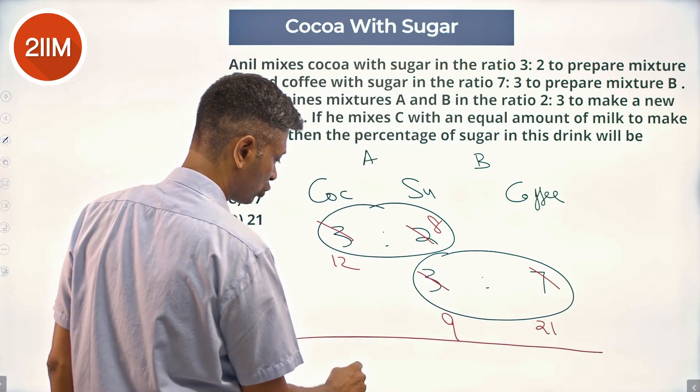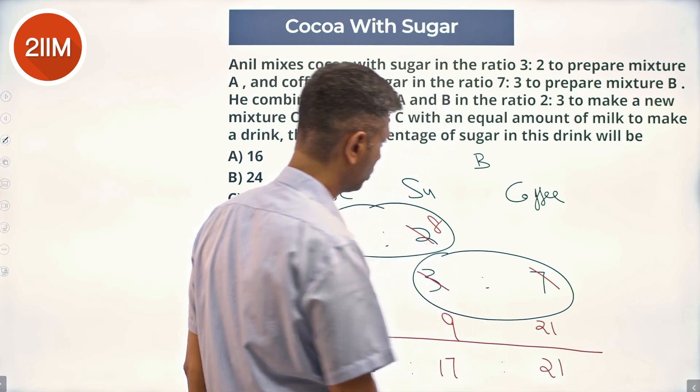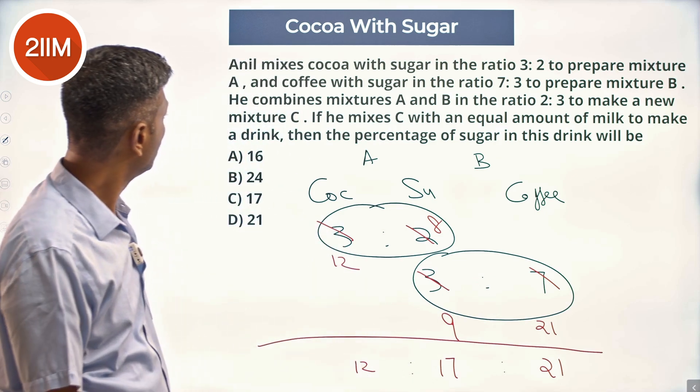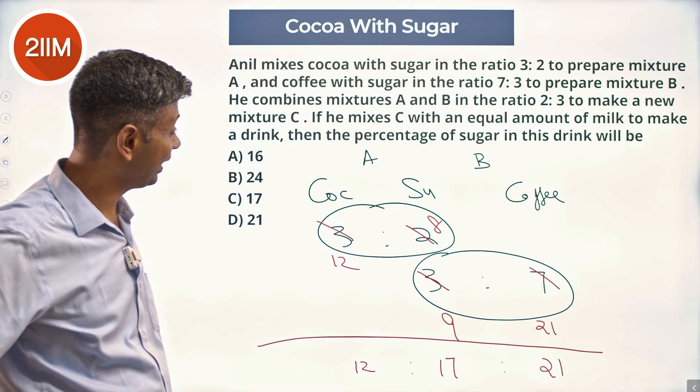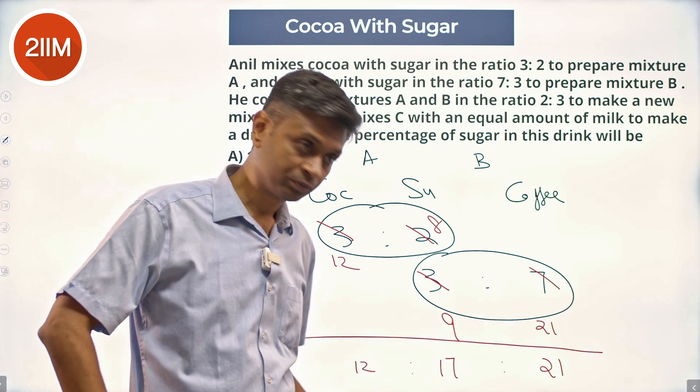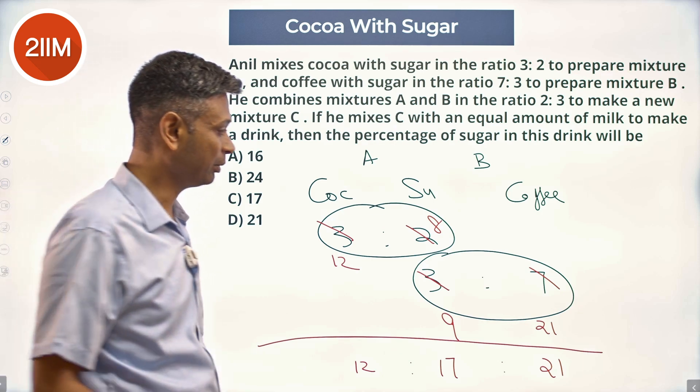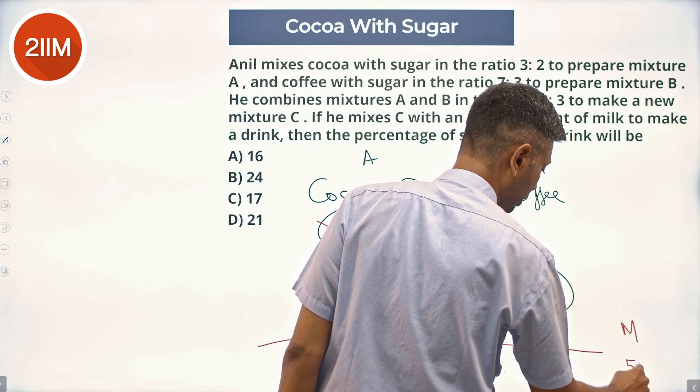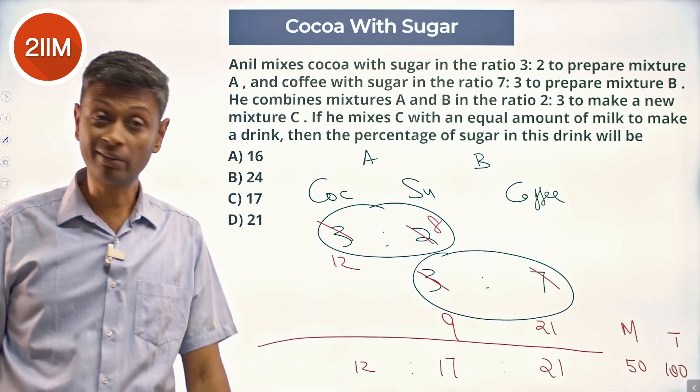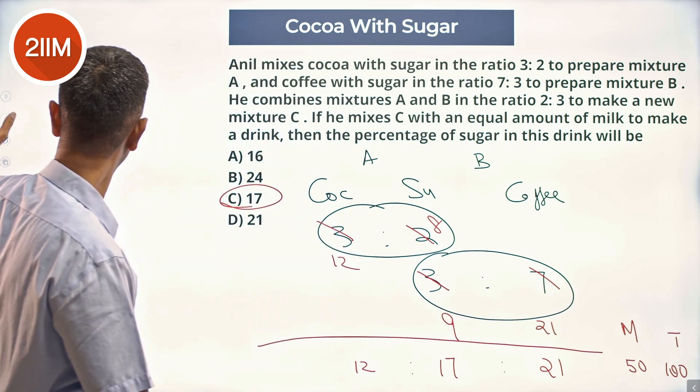So mixture C will have 12 units of cocoa, 17 units of sugar, and 21 units of coffee. He mixes C with an equal amount of milk to make a drink. 12 plus 17 is 29, plus 21 is 50. Equal amount of milk means the milk quantity is 50, total is 100. The percentage of sugar in this drink will be 17 by 100, which is 17%. Nice, a two-bubble question.